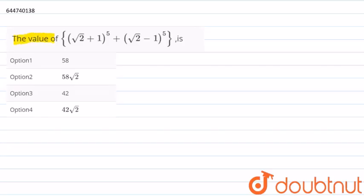We need to find the value of (√2 + 1)^5 + (√2 - 1)^5. So we know that according to binomial expansion...